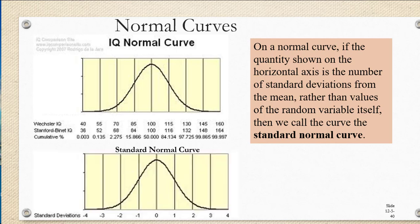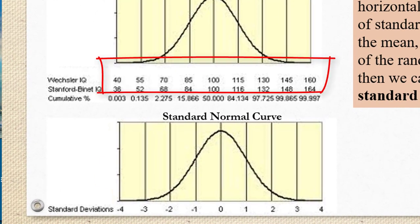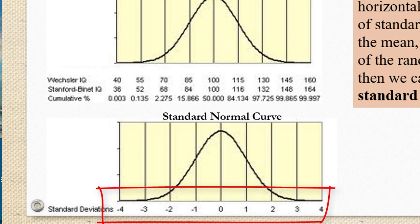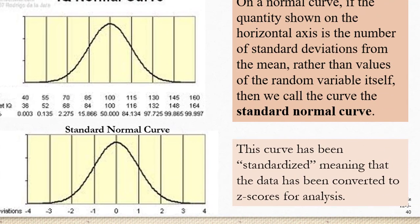Here's the IQ normal curve, but we've replaced the data values of 100, 115, 130, with the number of standard deviations away from the mean, or the z-scores, of those data values. This curve has been standardized, meaning that the data has been converted to z-scores for analysis.